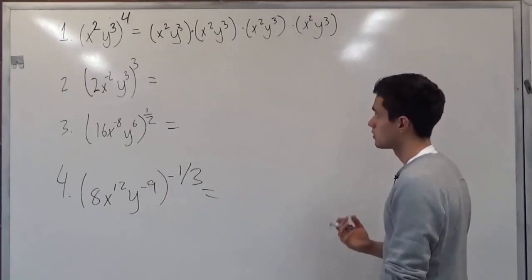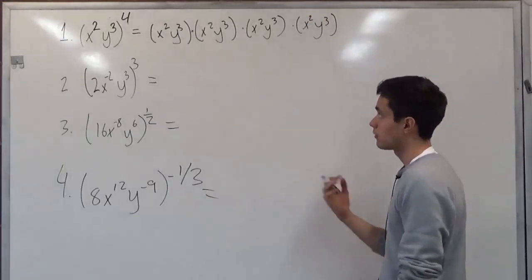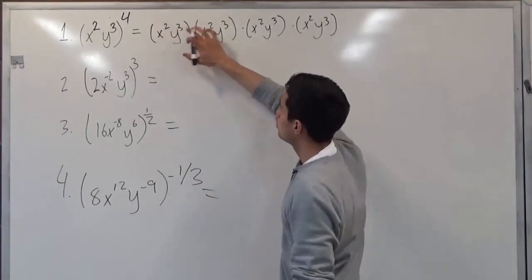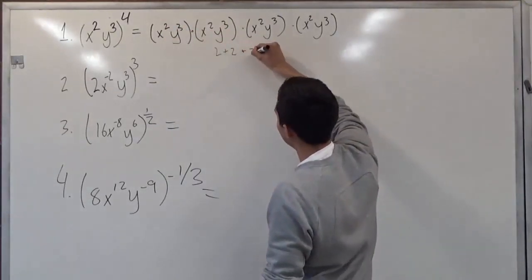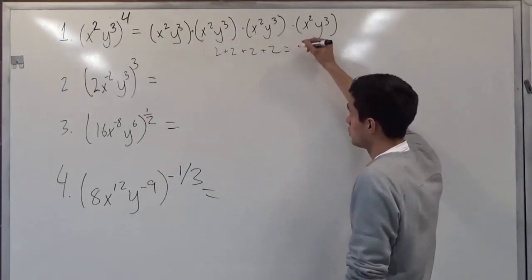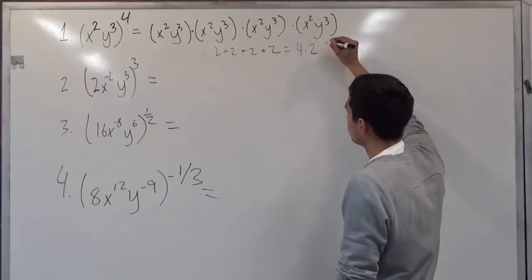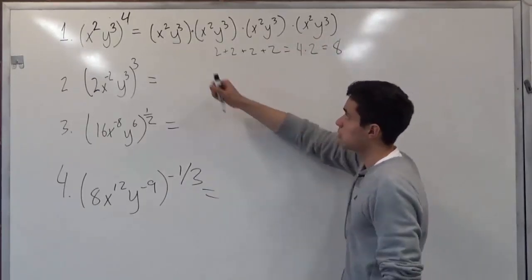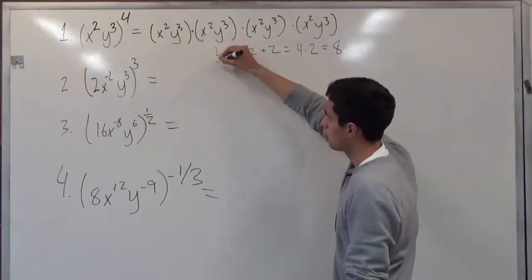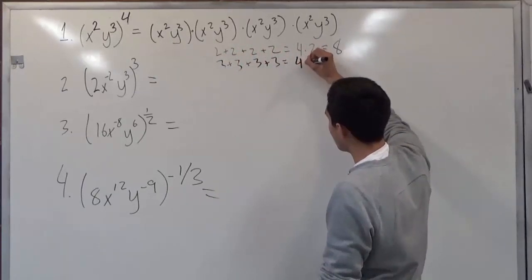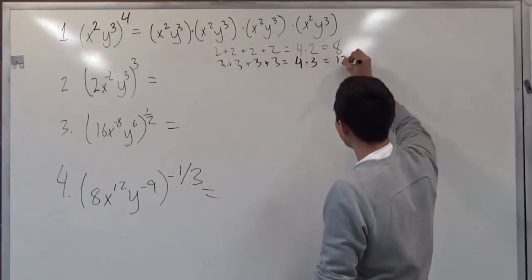So what this means, as we know before, is that we're adding each one. So 2 plus 2 plus 2 plus 2, which in turn is just equal to 4 times 2, which gives us 8. And the same can be applied to the 3. So we can have 3 plus 3 plus 3 plus 3, which is 4 times 3, which gives us 12.